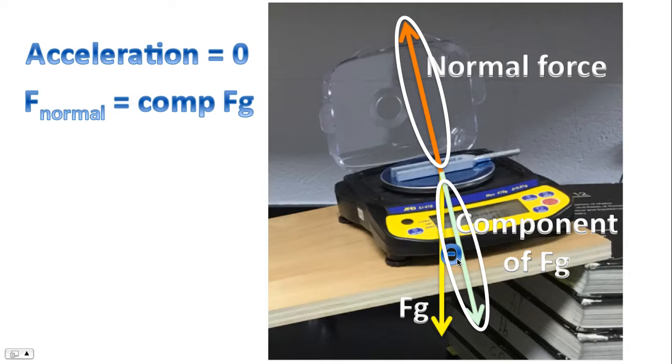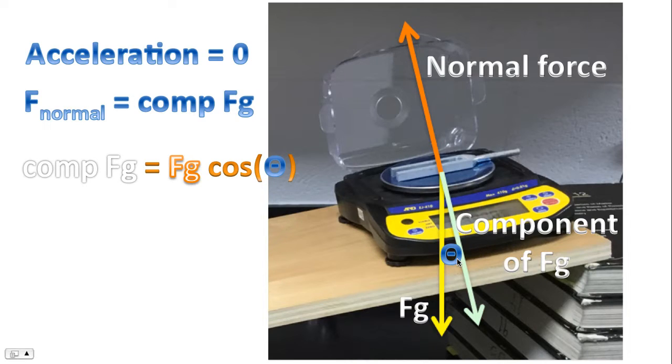Please note, there should also be a force of friction drawn in this diagram. That force of friction prevents the tuning fork from sliding off the balance. However, we will not be focusing on the force of friction because it's not a part of this analysis.